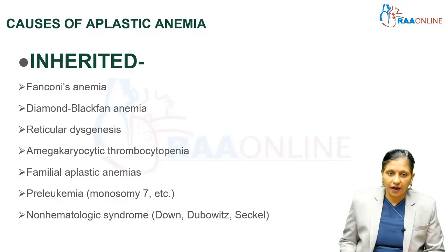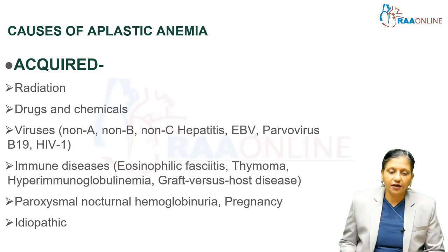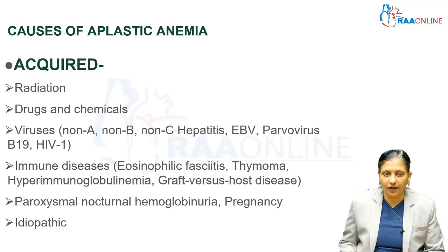Inherited conditions are among the causes of aplastic anemia. Acquired causes include radiation exposure, drugs and chemical exposure, and viruses such as non-A, non-B, non-C hepatitis, Epstein-Barr virus, Parvovirus B19, and HIV-1.